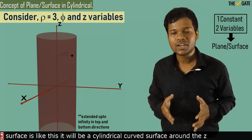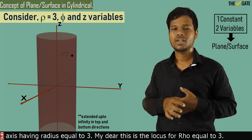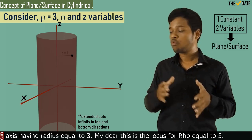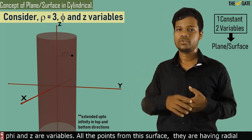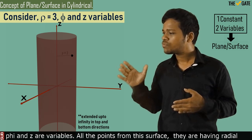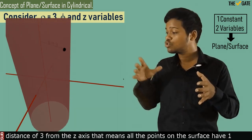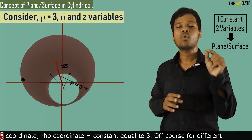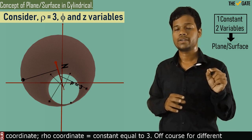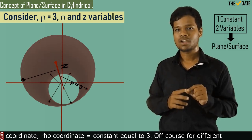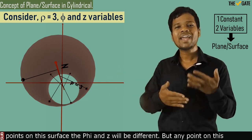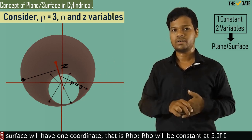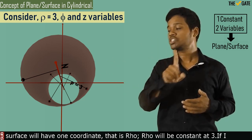It will be a cylindrical curved surface around the z-axis having radius equal to 3. This is the locus for rho equal to 3, where phi and z are variables. All the points on this surface have a radial distance of 3 from the z-axis, meaning the rho coordinate is constant at 3. Of course, for different points on this surface, phi and z will be different.